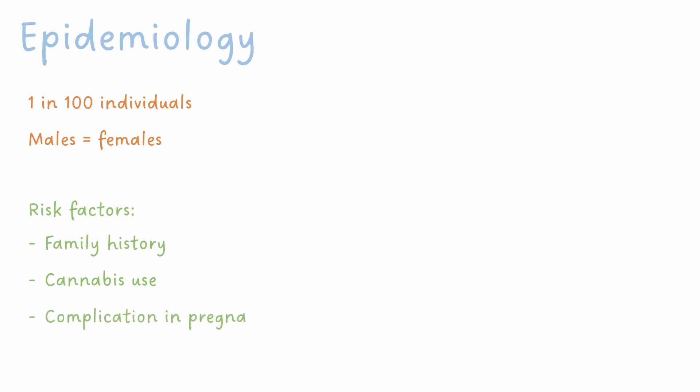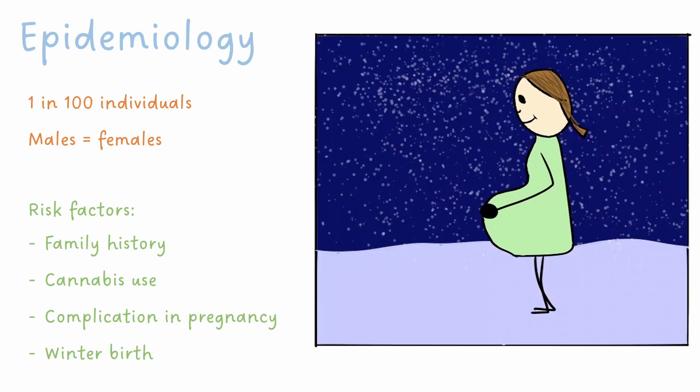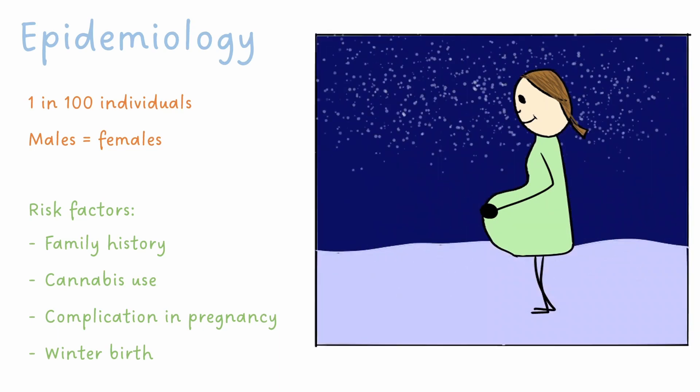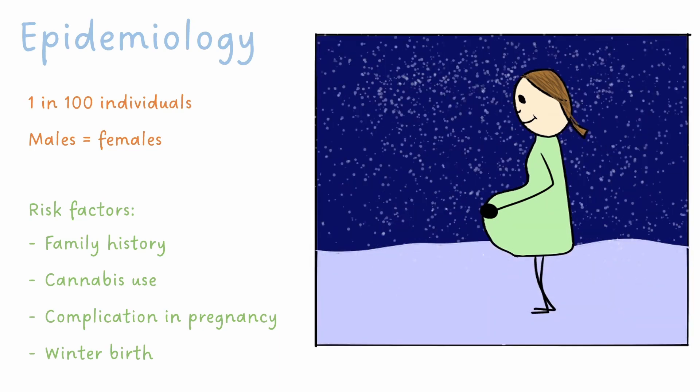Complications during pregnancy and childbirth, as well as winter births, also increase the risk. The reason for this is unclear, but it's theorized that there could be a link between schizophrenia and abnormalities in brain development, a lot of which happens in utero and neonates.